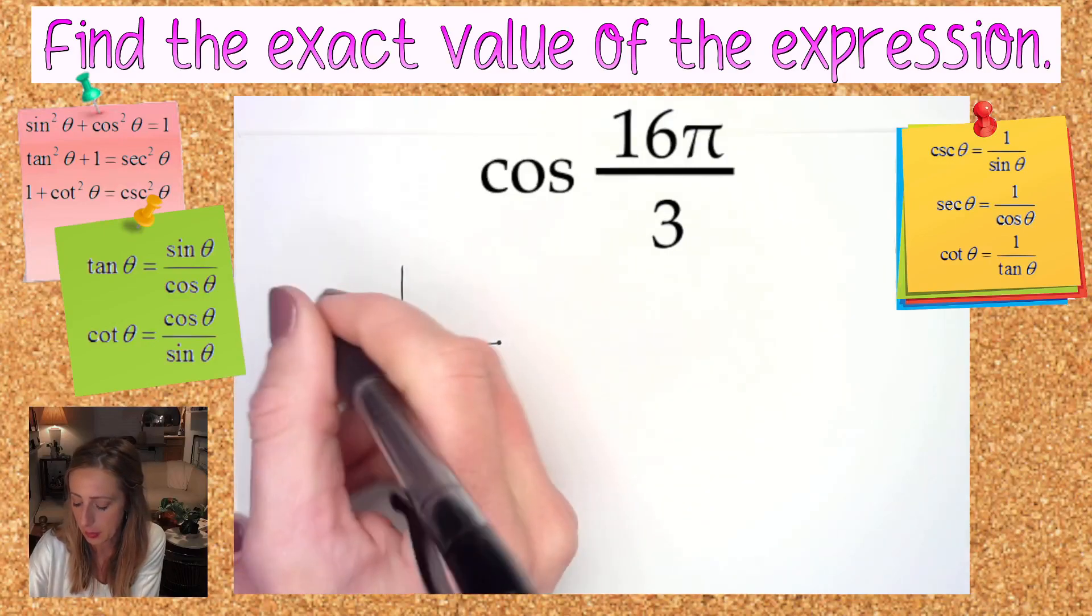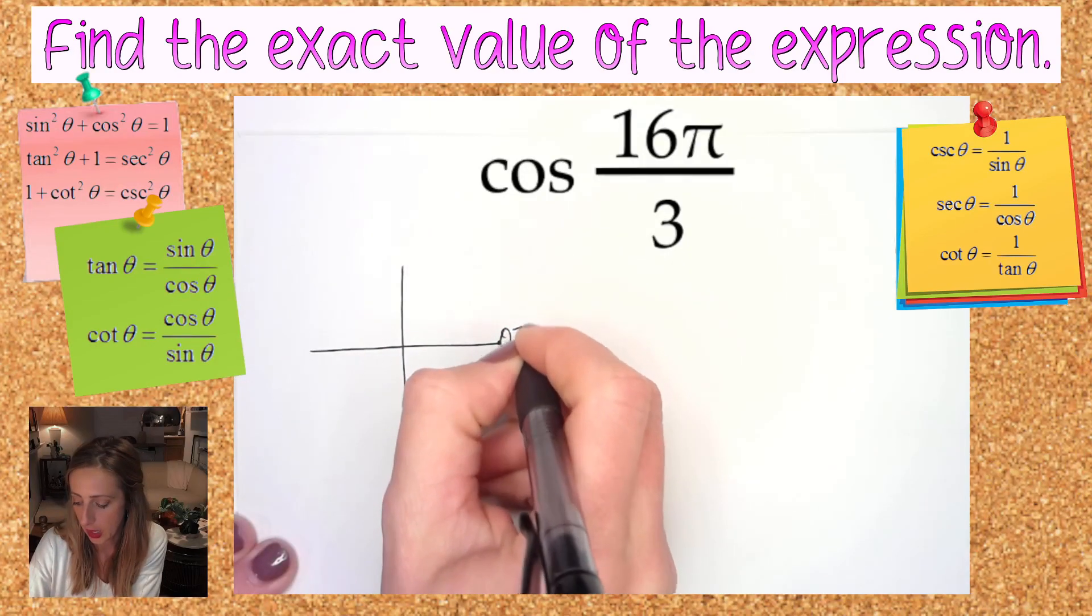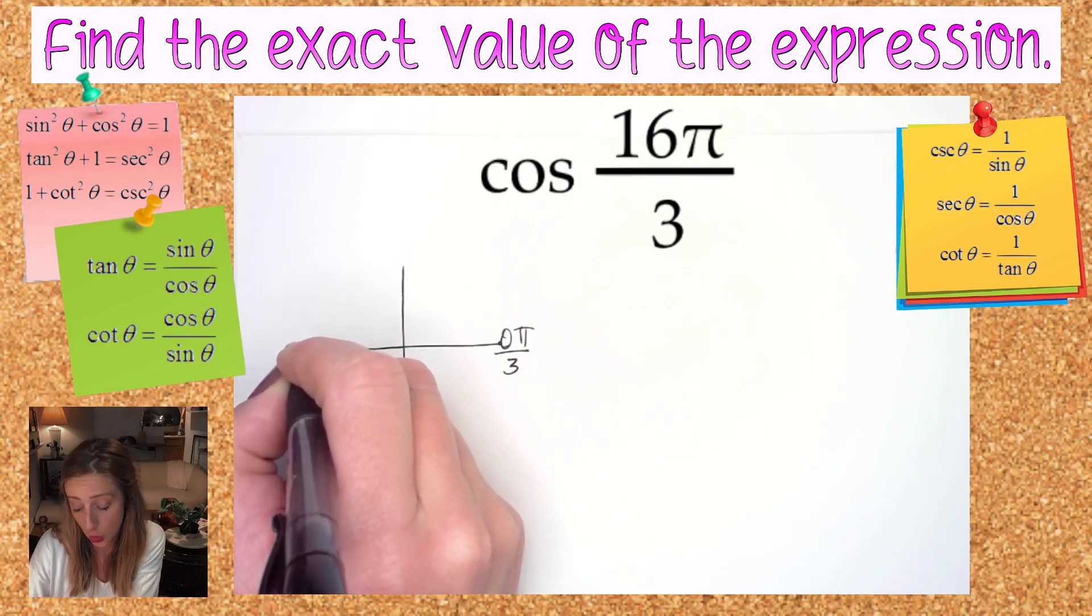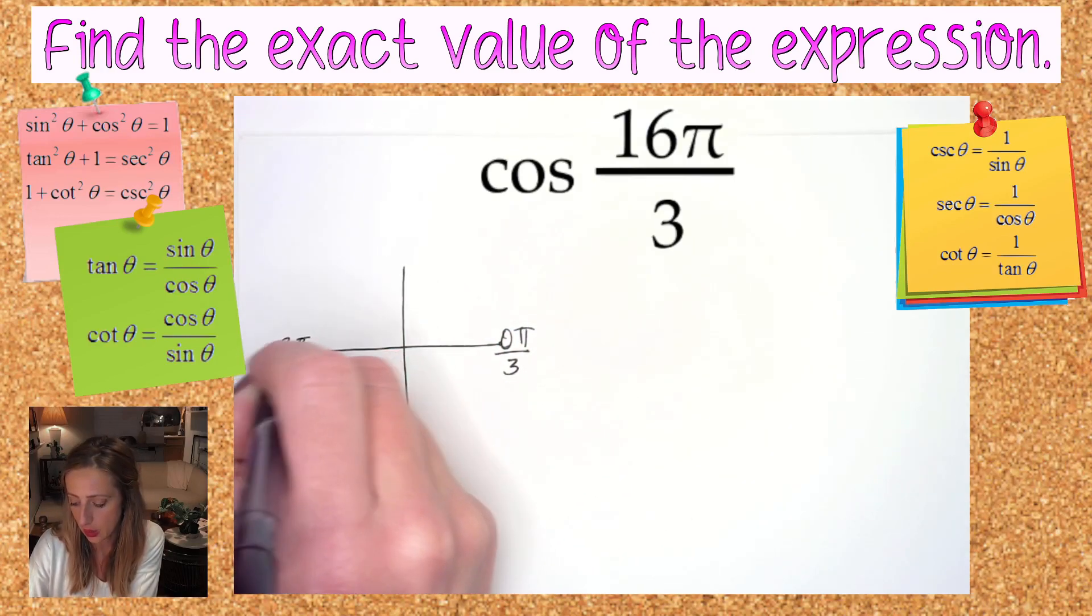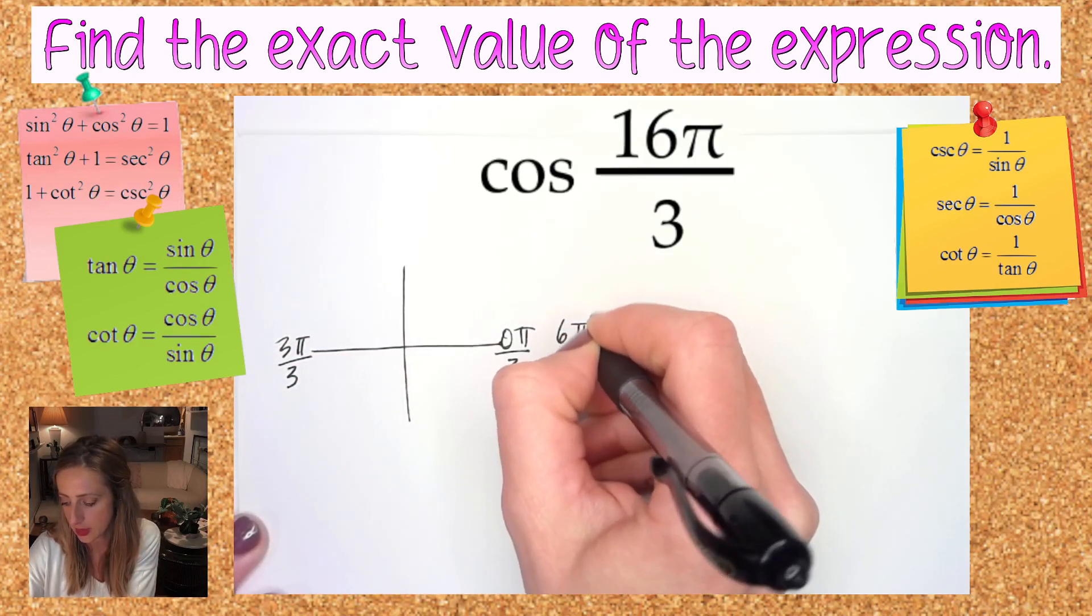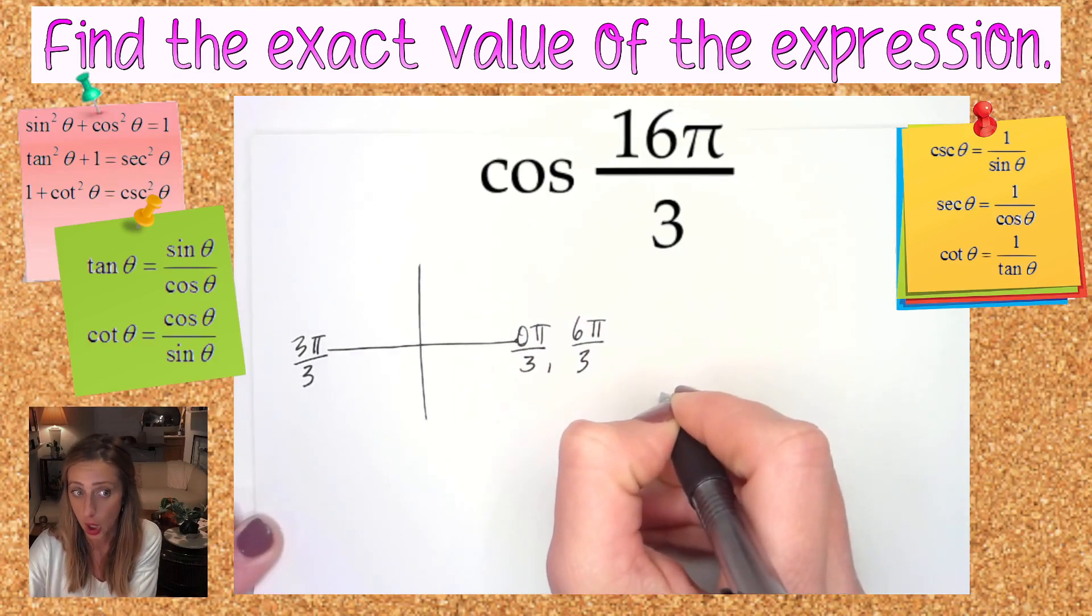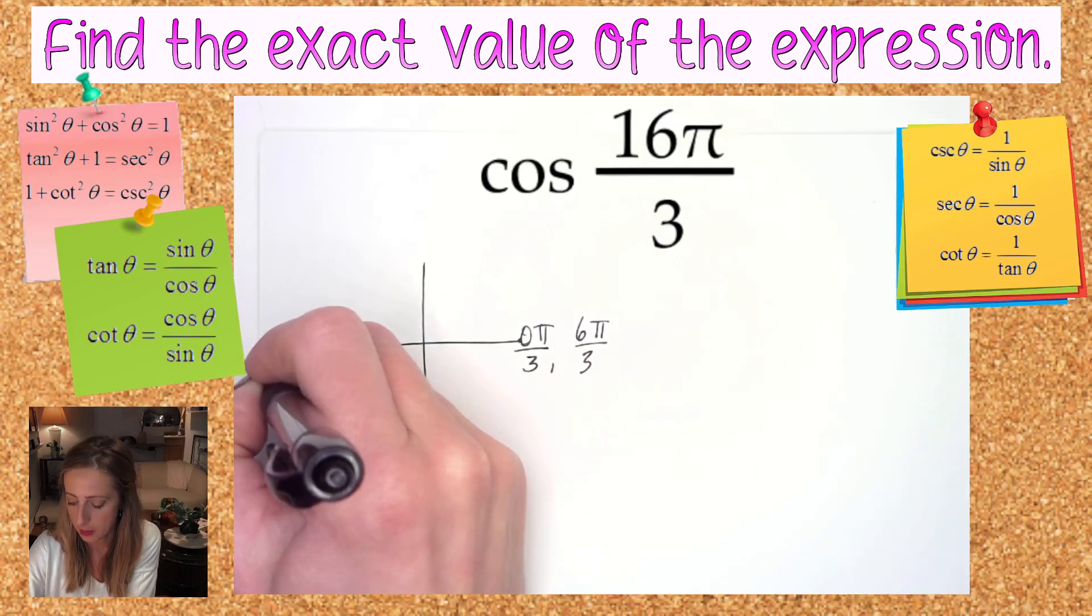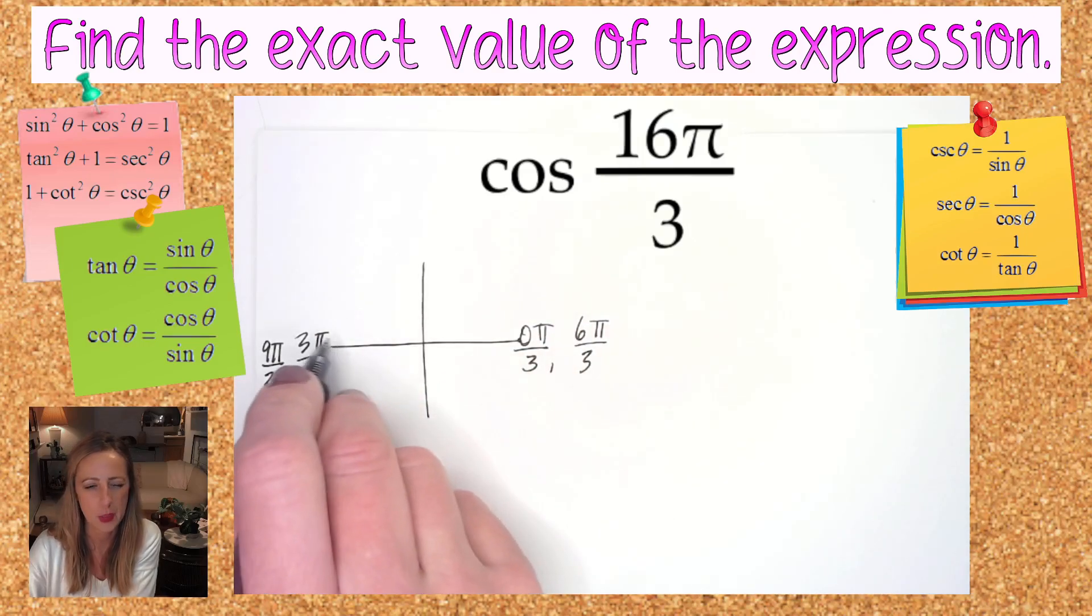Okay, so I need to find where 16π over 3 is. We have to have an idea of spacing. This is 0, π over 3. I'm going to use the denominator 3. That makes this spot, which is normally π, 3π over 3. That makes going around again, this spot is 6π over 3.